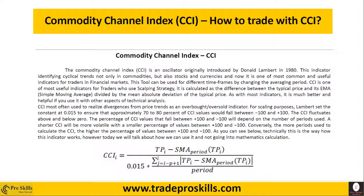CCI is most often used to identify divergence from price trends and to determine whether the market is overbought or oversold. Lambert's constant setting is 0.015, so approximately 70 to 80 percent of CCI values can be read within the range of minus 100 to plus 100, and this is how it is calculated.